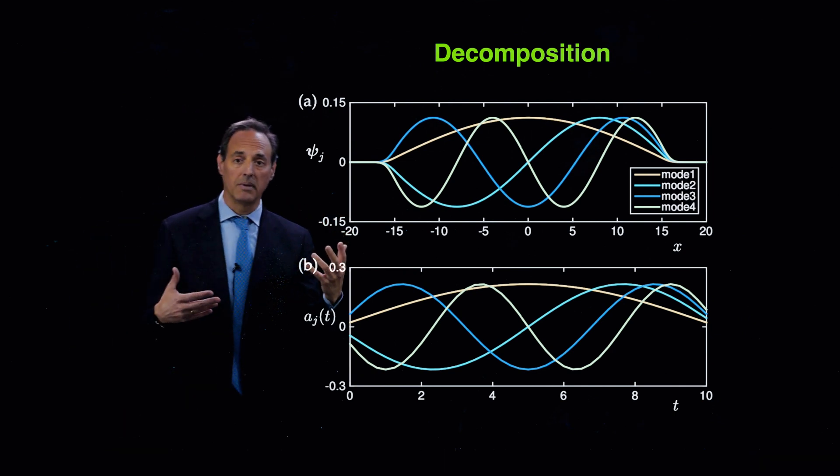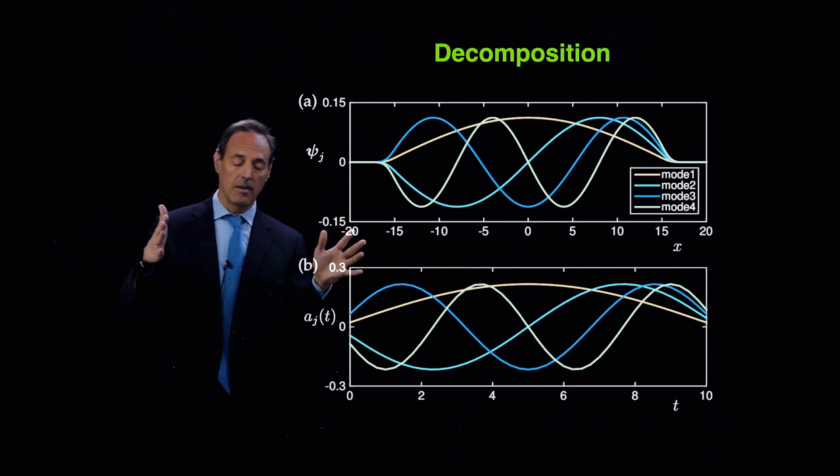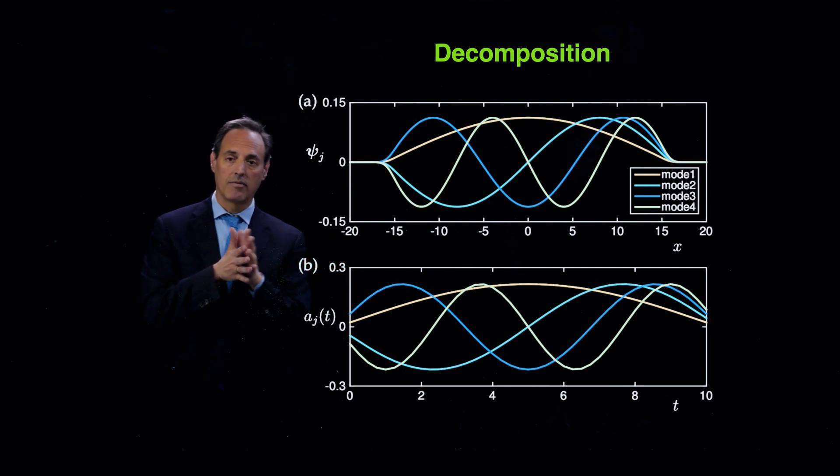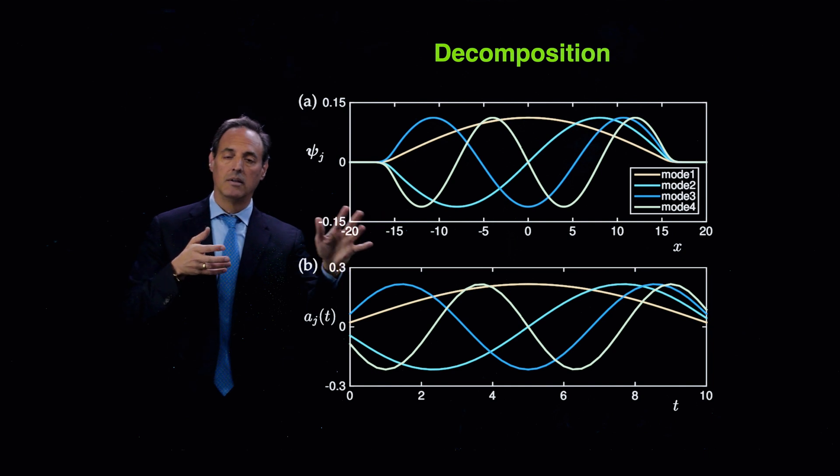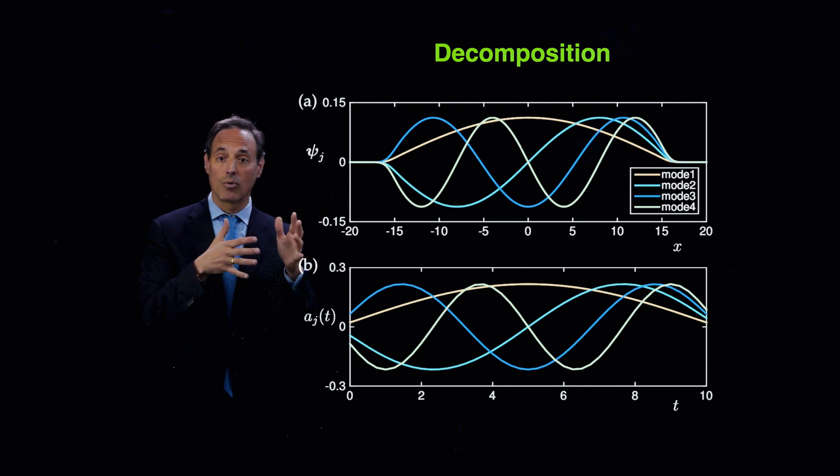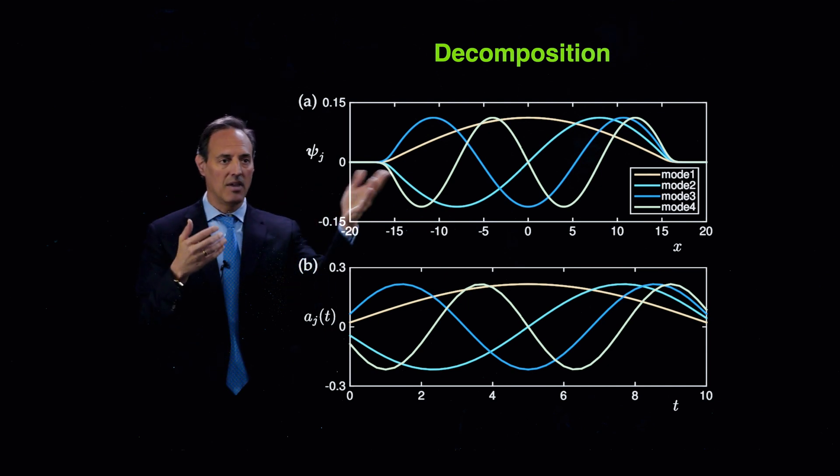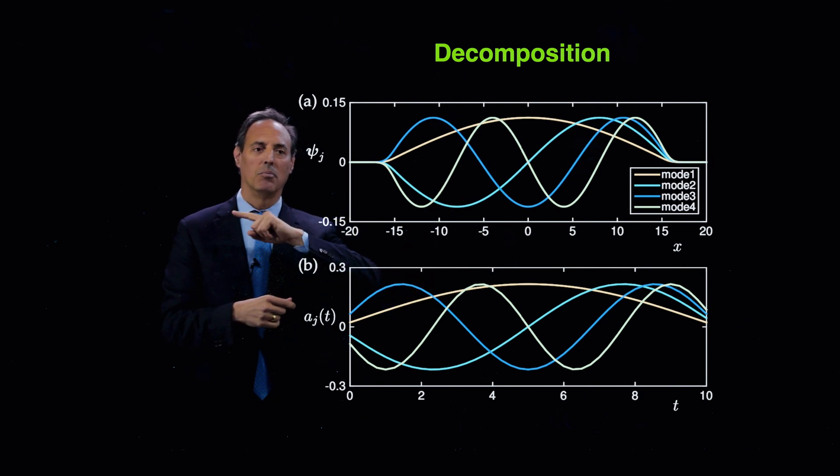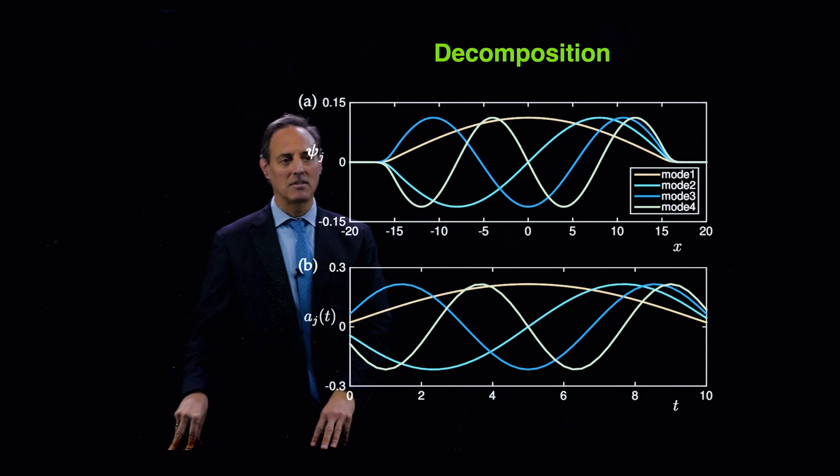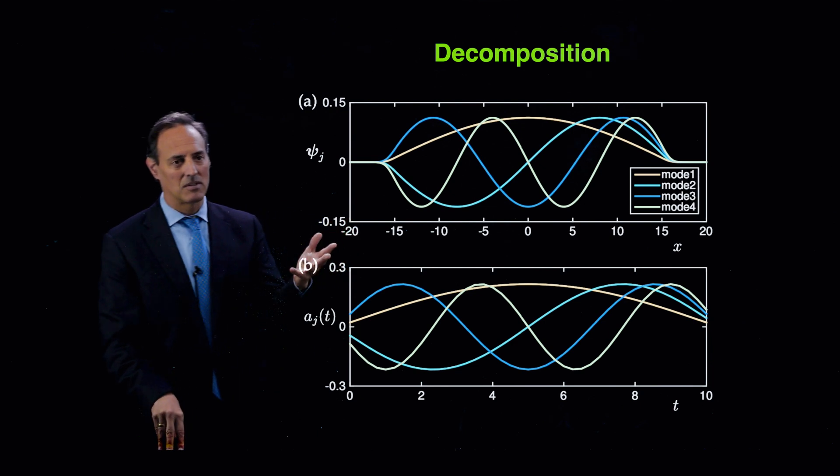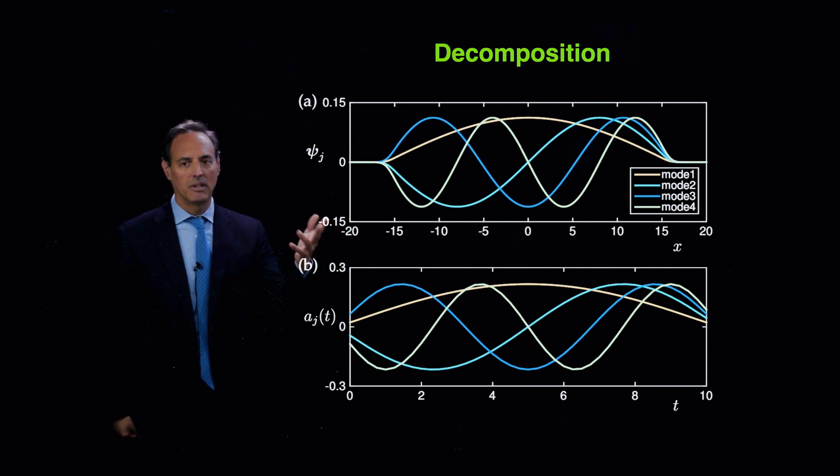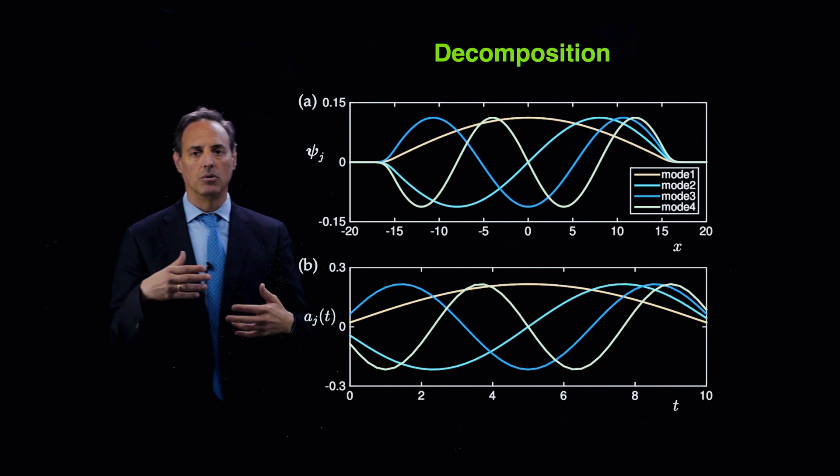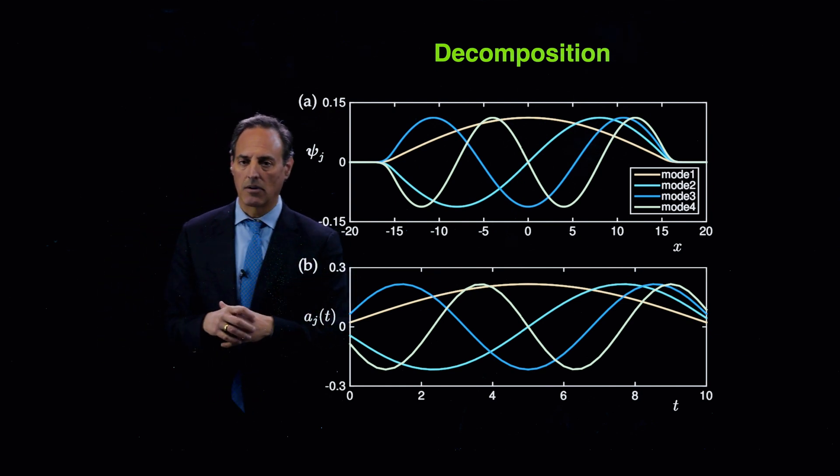There are methods that have been developed to try to handle this. So there's some recent methods out that basically say, well, if I have a translation wave, how about if I do an alignment of this wave? In other words, find the frame of reference, find this moving frame of reference, reset all the data, and then do your model reduction in that new coordinate system. So these are the kind of techniques you might try to use on something like this, where you have fundamentally invariance that the SVD is going to choke on.